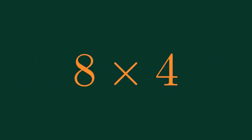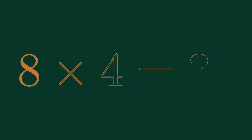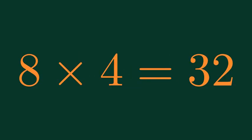What is 8 times 4? 8 times 4 is equal to 32.